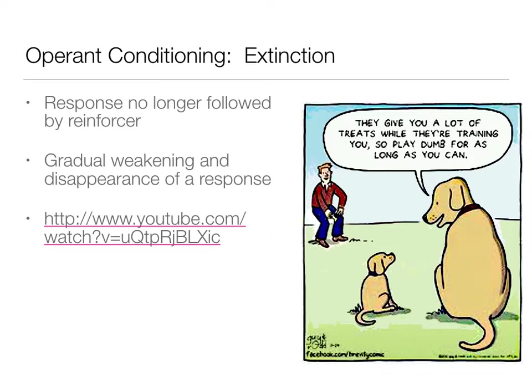There's also extinction in operant conditioning, just like discrimination and generalization from classical conditioning. Extinction is the gradual weakening or disappearance of a response. For example, a kid who throws themselves down and cries every time they see the parent: at some point that behavior got attention, and so they were more likely to do it again. The parent has since figured that out and stopped giving attention, so the kid tries the behavior but gets no reinforcement, and you start to see gradual weakening and hopefully disappearance of that behavior.